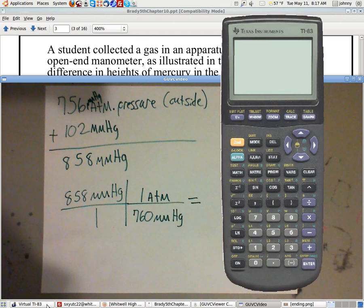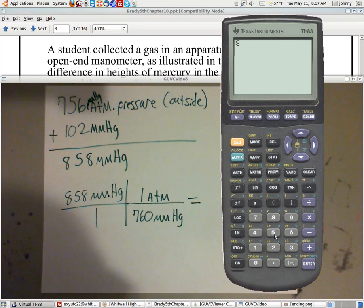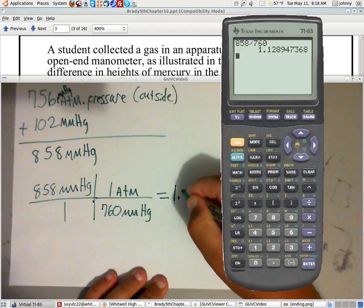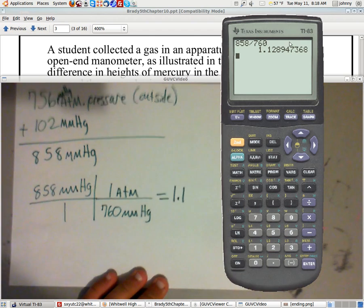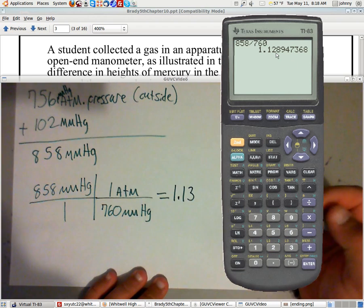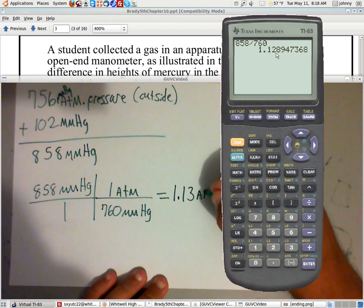So all that you need now is a handy-dandy calculator. Let me pull one up here. Once you have your calculator turned on, just type in 858 divided by 760 equals. Notice that we've got to keep three sig figs. My answer here will be 1.1, but this 8 pushes the 2 to 3, so 1.13 ATMs.